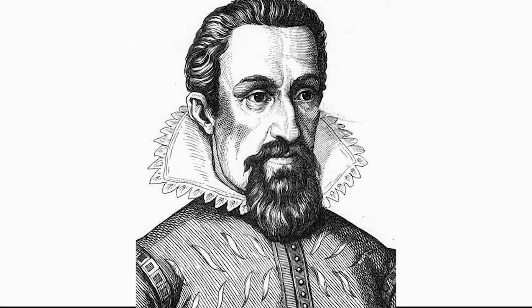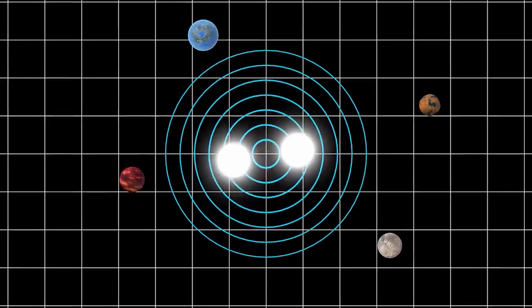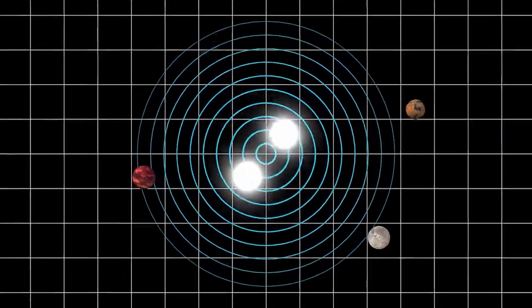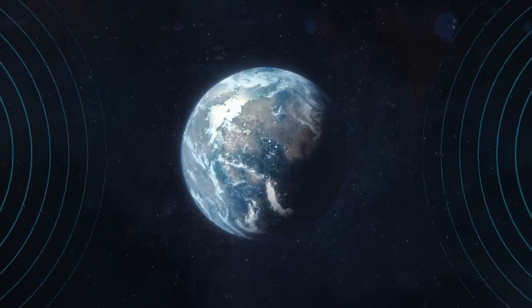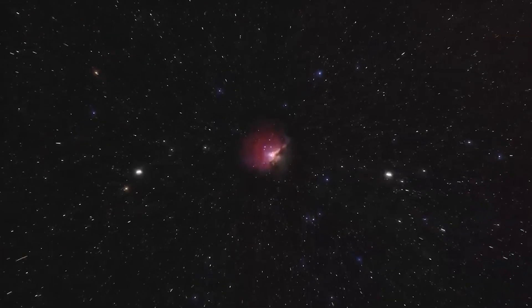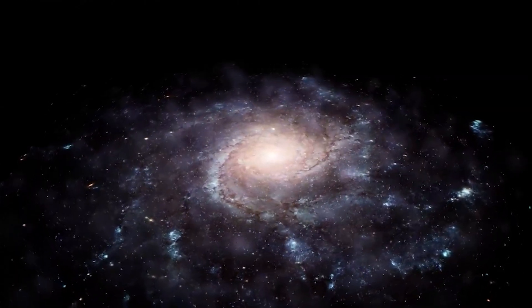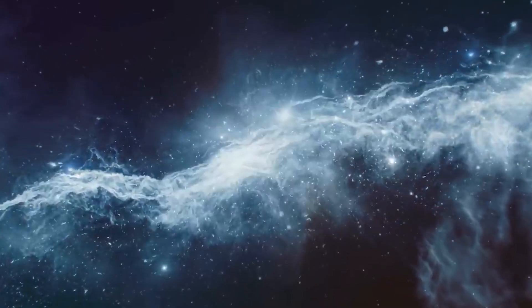Johannes Kepler, a 17th century German mathematician and astronomer, formulated three fundamental laws of planetary motion known as Kepler's laws. These three laws, formulated between 1609 and 1619, marked a major shift in our understanding of the cosmos, laid the foundation for Isaac Newton's theory of gravity, described the motion of planets around the sun, and revolutionized our understanding of celestial mechanics.